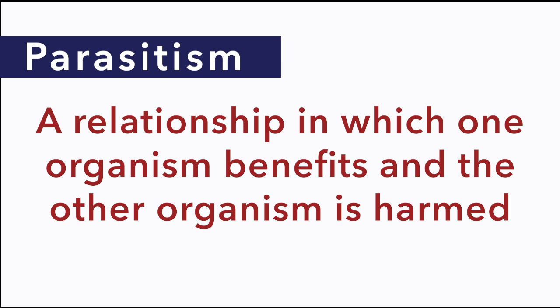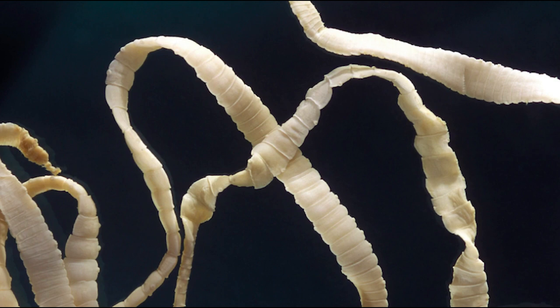Parasitism is a symbiotic relationship in which one organism benefits and the other organism is harmed. Typically, one of the partners lives on or in the other organism and feeds on it. One of the organisms, the parasite, meets its needs at the expense of the other organism, the host. Tapeworms, for example, can live in the small intestines of human beings and can even grow as long as 10 meters. They benefit by absorbing the nutrients from the human's food. The hosts, or the humans, are harmed because they do not get the nutrients from the food they eat. Tapeworm eggs live in meat or fish, so it's important to properly cook your food so that the heat will destroy those eggs.